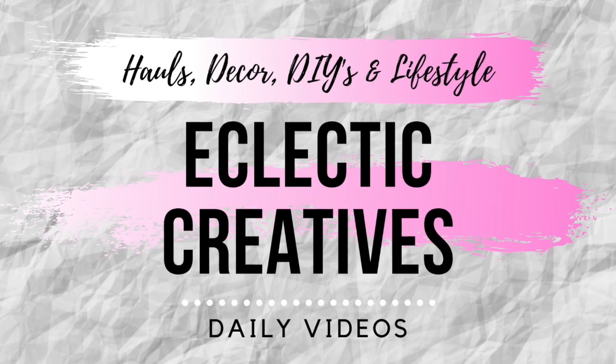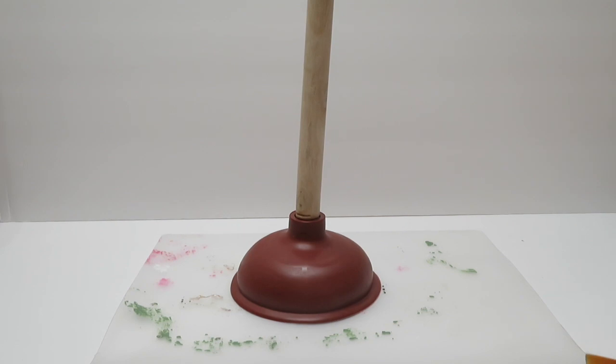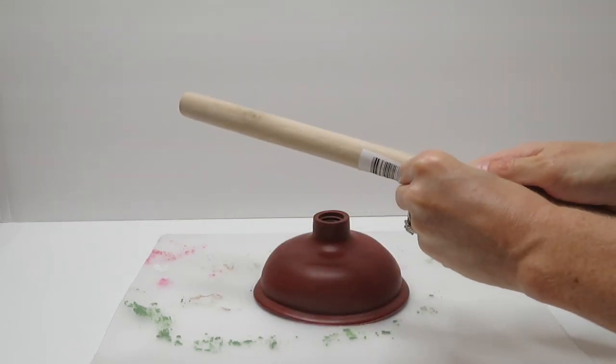If you're interested in checking out this DIY, go ahead and stick around for this video. The first thing you're going to want to buy from Dollar Tree is one of these plungers. You're going to want to take the sticker off.